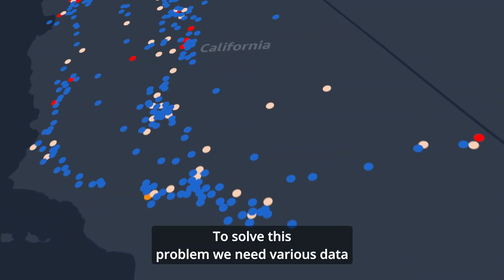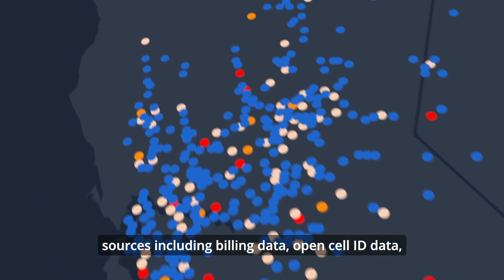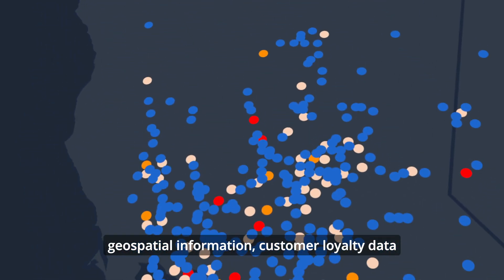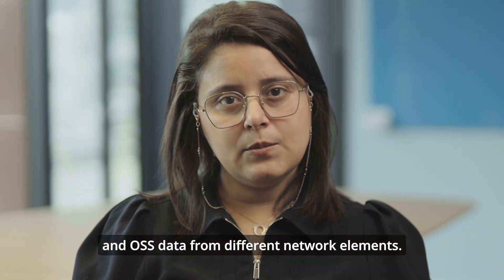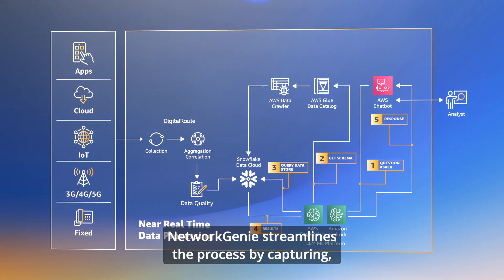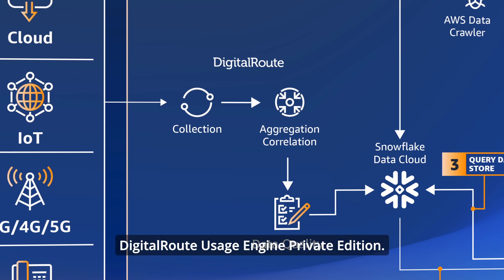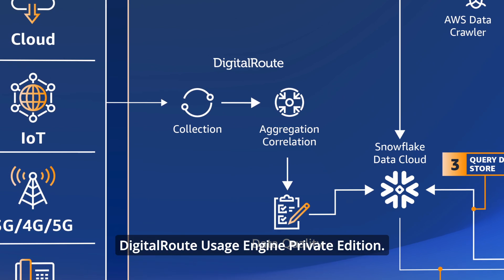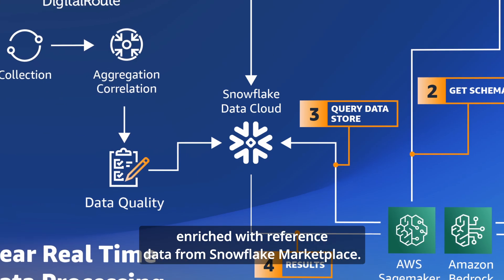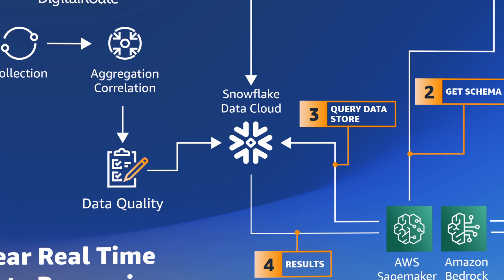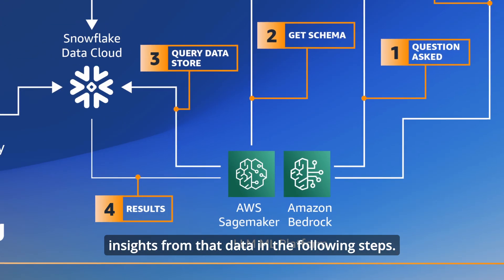To solve this problem, we need various data sources, including billing data, open cell ID data, geospatial information, customer loyalty data, and OSS data from different network elements. Network Gen.E streamlines the process by capturing, parsing, and enriching complex telco data using DigitalRoute Usage Engine Private Edition. The data is then stored in Snowflake and enriched with reference data from Snowflake Marketplace. Amazon Bedrock is then used for extracting insights from that data.